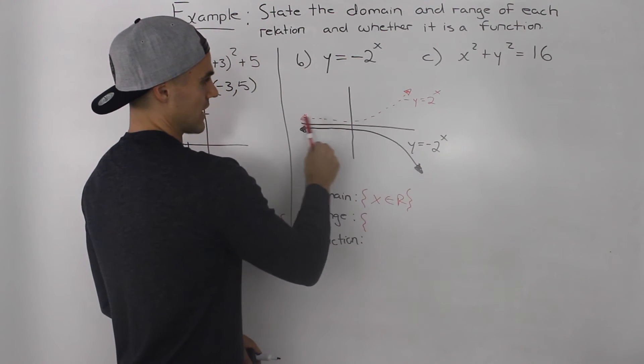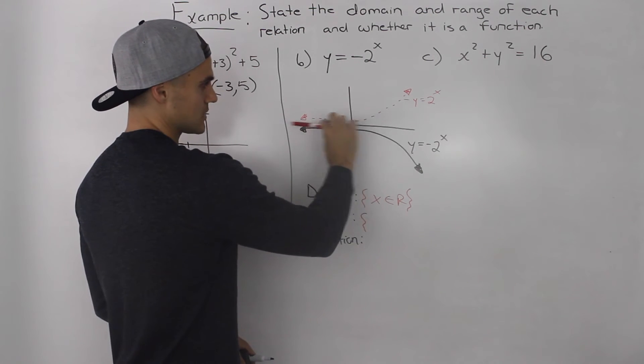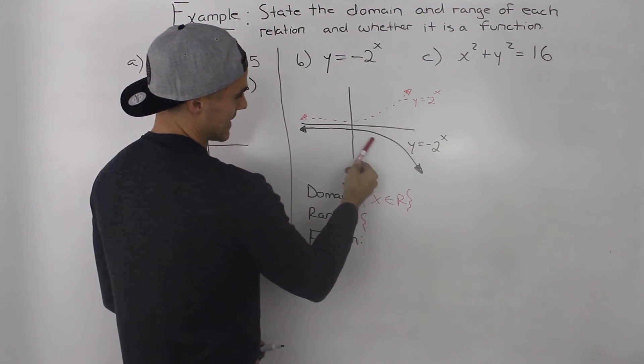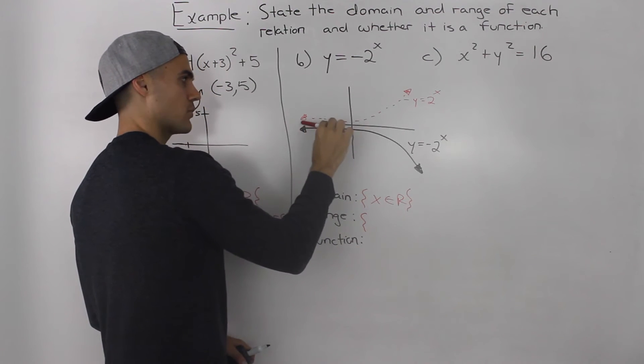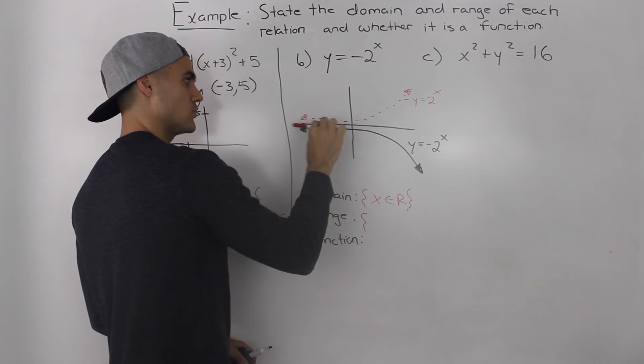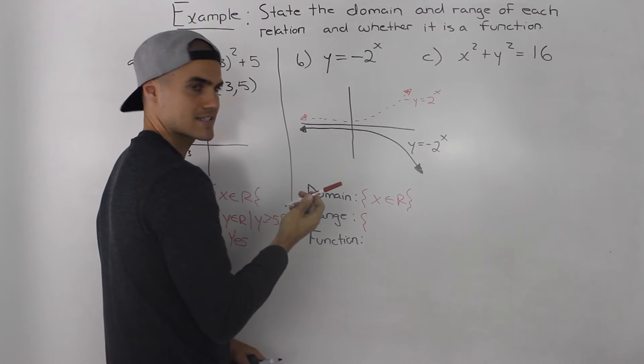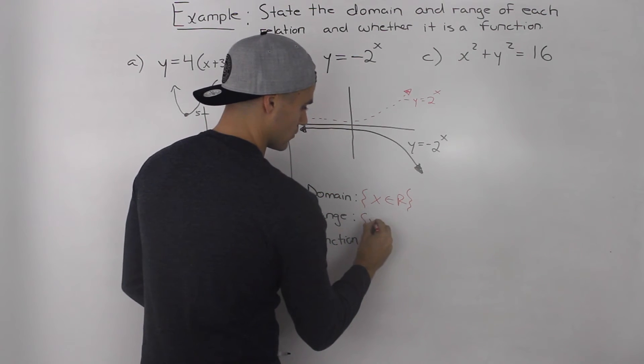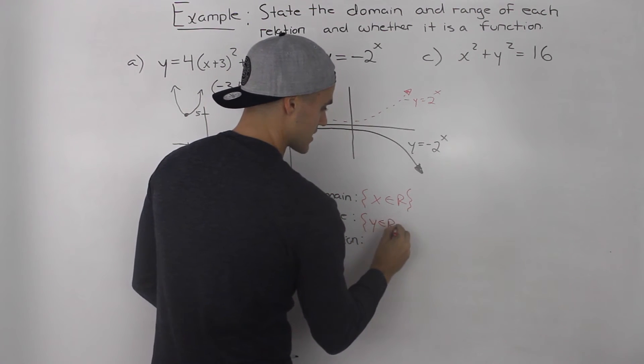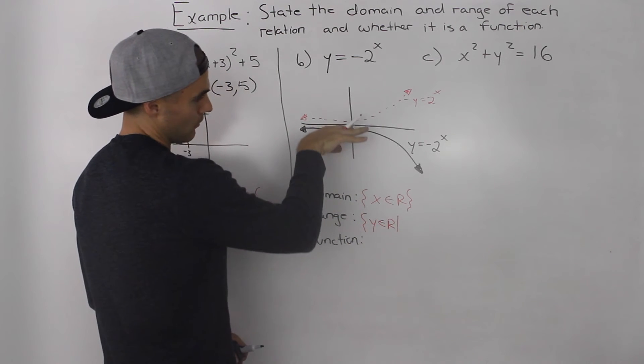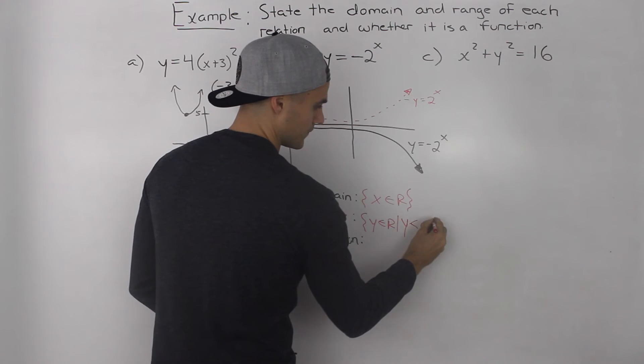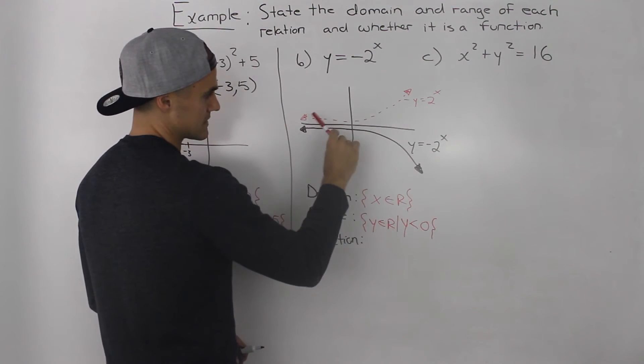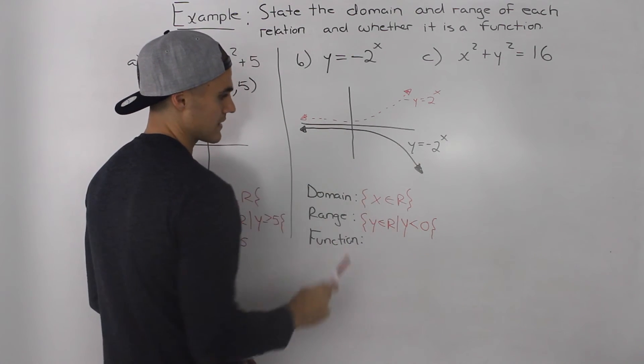Notice how there's a horizontal asymptote at y is equal to 0, meaning that as x is going to negative infinity, the y value is approaching this value of 0, but it never hits it. So the y values can be anything. However, they have to be less than 0, right? Because that represents the horizontal asymptote.